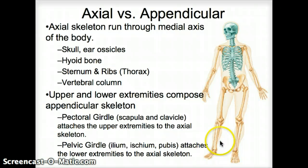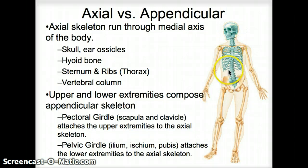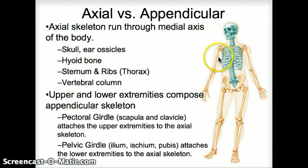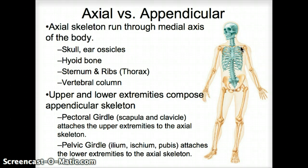To review: the axial skeleton is the core, the center, and the appendicular skeleton is the appendages. What needs to be paid attention to is that the shoulder blade, the clavicle or collarbone, as well as the pelvis are the places where we move from axial to appendicular skeleton.